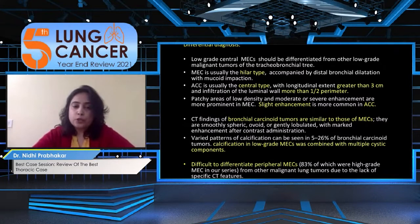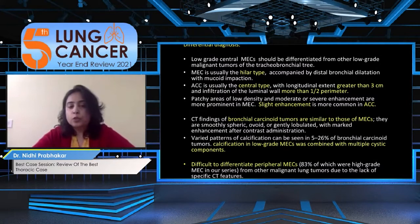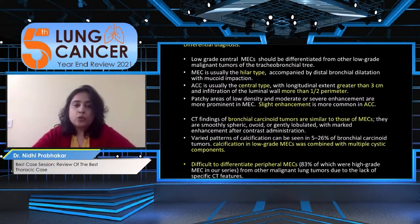Low-grade malignant central tumors — mucoepidermoid carcinoma, adenoid cystic carcinoma, and bronchial carcinoid — are difficult to differentiate on imaging. Calcification in mucoepidermoid carcinoma, when present, is associated with cystic changes, while adenoid cystic carcinoma typically involves the main trachea and main bronchus and is less commonly seen in the lobar bronchi.